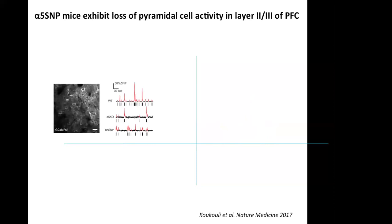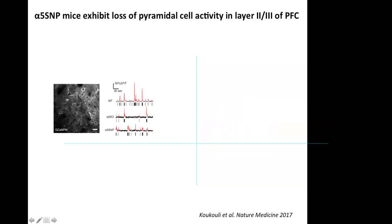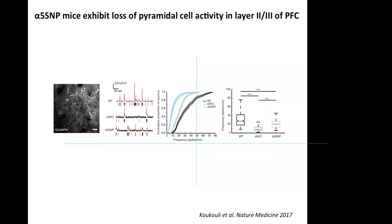I recorded pyramidal cell activity in wild-type mice, alpha-5 knockout mice, and mice carrying the human alpha-5 polymorphism. As shown in representative examples, the alpha-5 knockout mice showed decreased activity compared to wild-type mice, whereas the activity of the alpha-5 SNP mice was intermediate between wild-type and alpha-5 knockout mice.